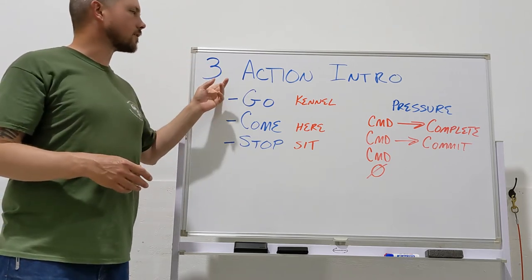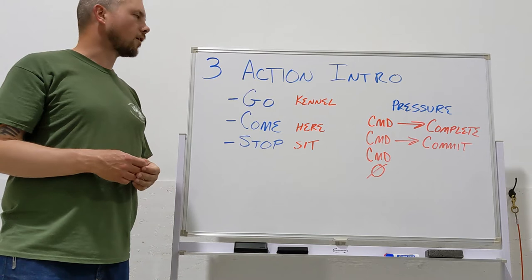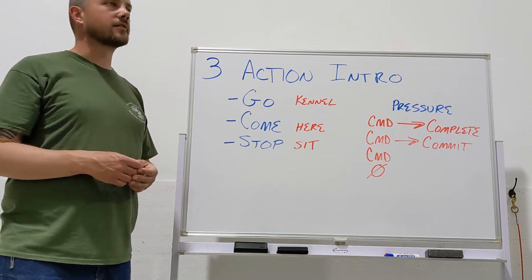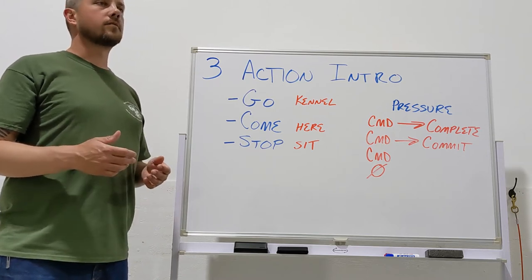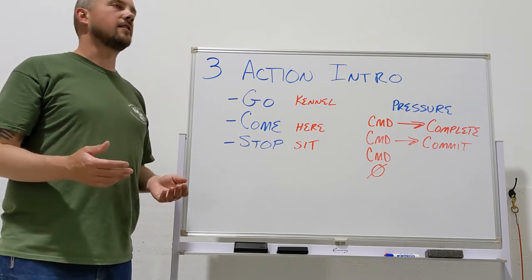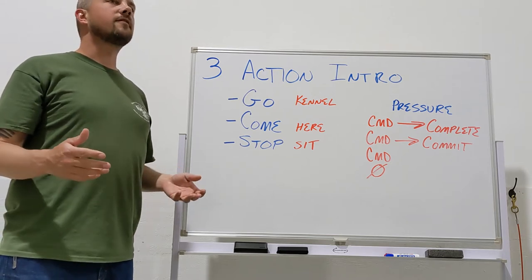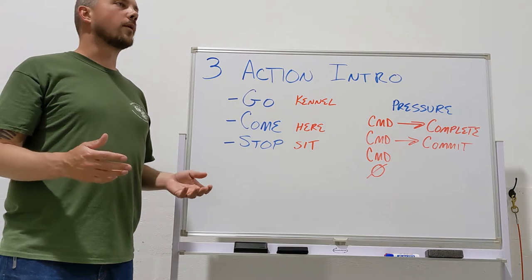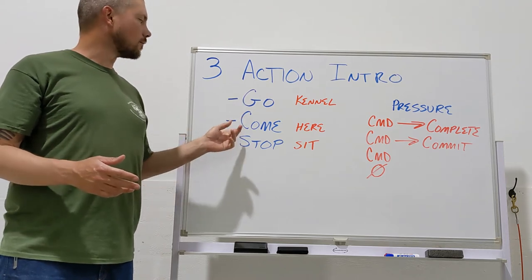So what we're doing with this work is what's often called a three-action introduction. We're going to condition him to the e-collar using the three main actions that we ask any dog to do. Any behavior you're going to ask him to perform is going to be go, come, or stop.